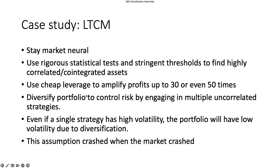This is a market-neutral strategy, and they use rigorous statistical tests — requiring over 95% or 99% statistical significance — before opening a position in correlated or co-integrated assets. They use cheap leverage to amplify profits up to 30 or even 55 times, but that's where the risk lies as well. They diversify the portfolio to reduce risk by engaging in multiple uncorrelated strategies — but this uncorrelated assumption is only proven by historical data, and when markets move together in one direction, which had never happened before, the seemingly small or absent correlation turns out not to be supported by past data.